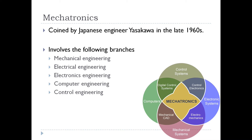Electronic systems are used to transduce information between the computer world and the mechanical disciplines. In mechatronics systems, electronic devices are used to design circuits like analog circuits, digital circuits, etc. Microprocessor and microcontroller based systems are most widely used in mechatronics systems.